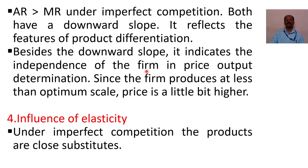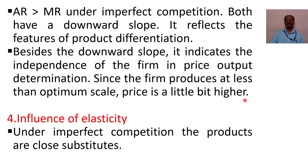Both AR and MR have a downward slope under imperfect competition, which reflects the feature of product differentiation. Besides the downward slope, it indicates the independence of the firm in price-output determination. Since the firm produces at a less than optimum scale, the price is a little bit higher.